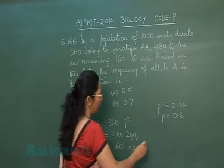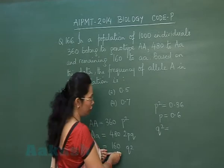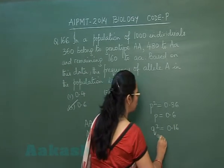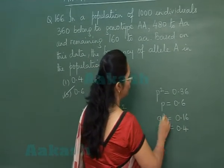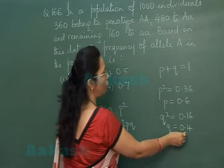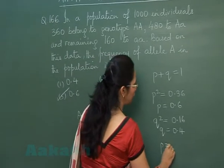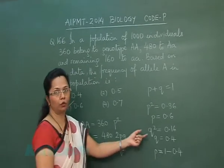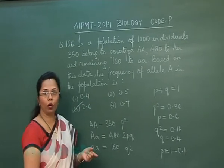Alternatively, using Method 2: q² = 160/1000 = 0.16, so q = 0.4. Using the equation p + q = 1, we get p = 1 − 0.4 = 0.6. Once again, our answer is 0.6.